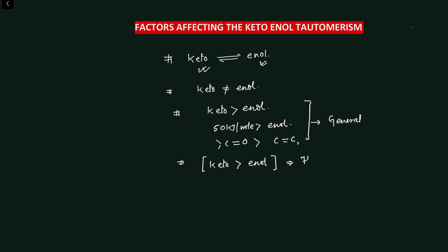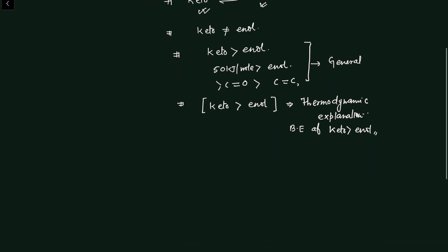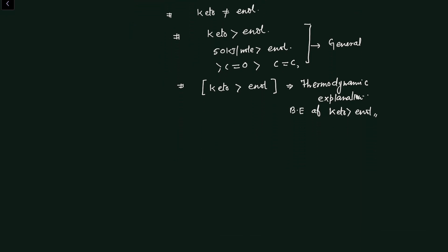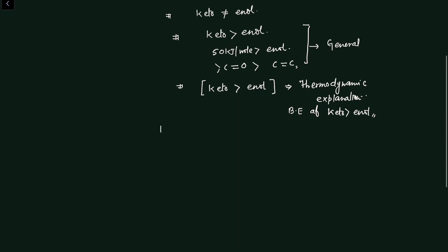We will understand the thermodynamic explanation by calculating the bond energies of the keto form and enol form in the next series of videos. So it is clear that one dynamic equilibrium exists between the keto and enol forms, but it doesn't mean that the keto form is always more stable than the enol form. We can understand this statement with the help of some examples.